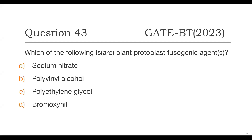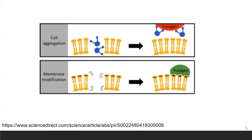Let's see what fusogens are and how they act. Fusogens are molecules which help protoplasts or cells fuse together, and they can work in two ways. The first way is they can cause cell aggregation, as we see in the first case.